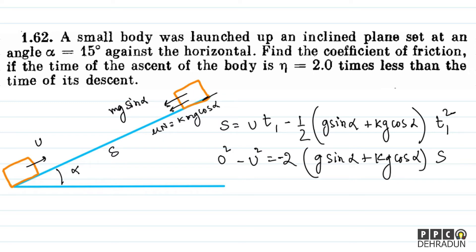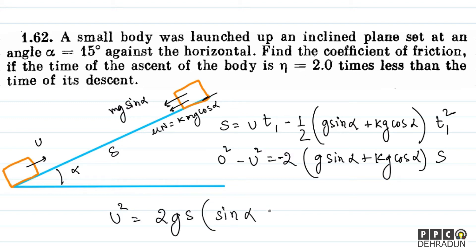During the entire journey, friction is present along with the gravity component. The first equation (with t1²) seems complicated, but the second equation — u² = 2gs(sin alpha + k cos alpha) — is quite helpful.